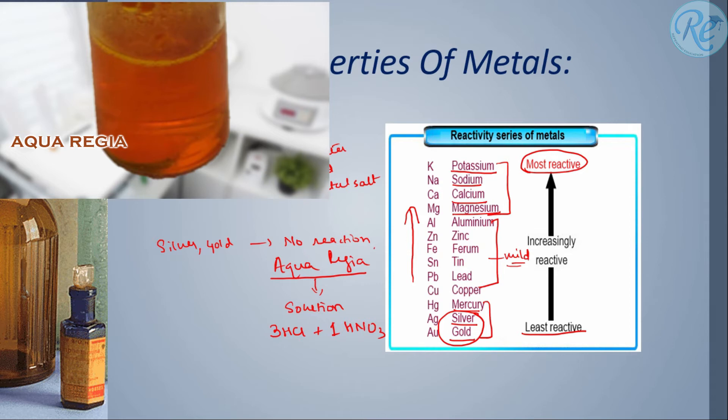That means if I add one unit, if I add 10 grams of HNO3, I should add 30 grams of HCl. So it's a solution containing these two in this ratio that is three is to one.